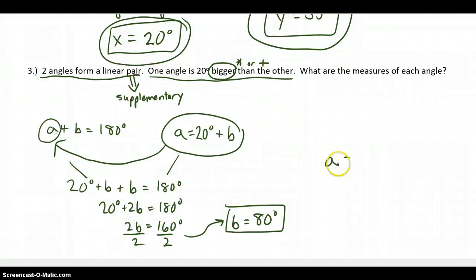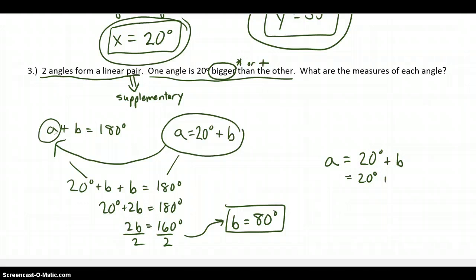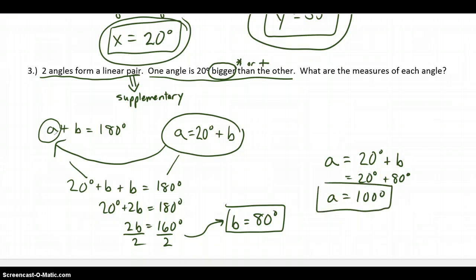To figure out A, I know that A is 20 degrees bigger than B. I just figured out B is 80 degrees, so A is 100 degrees. I can check this answer by adding 80 degrees plus 100 degrees and getting 180 degrees, confirming they form a linear pair. And 100 degrees is indeed 20 degrees bigger than 80 degrees.